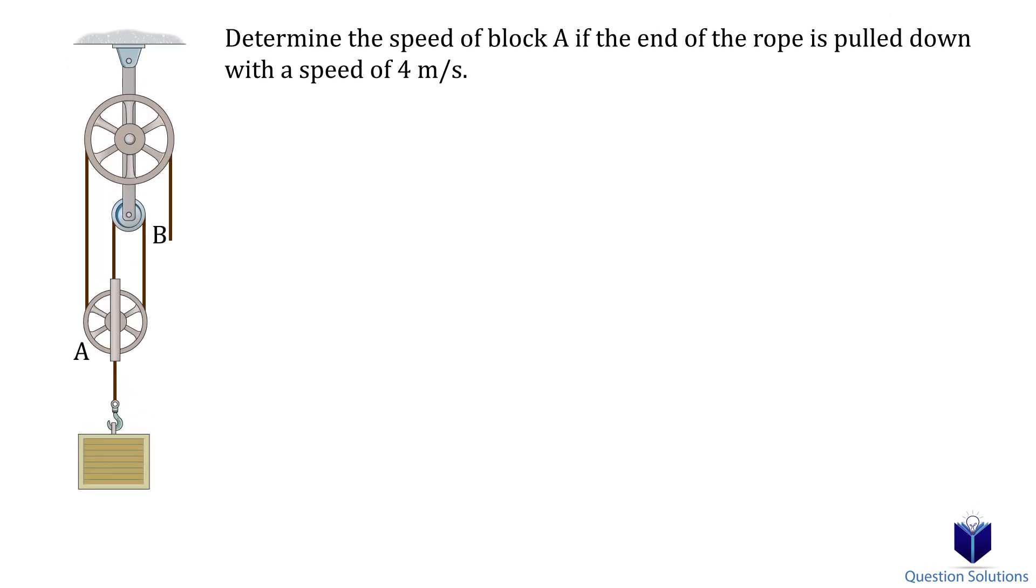Let's look at one last example. This isn't a hard example, but I wanted to show what happens when we have fixed lengths that we actually do need to account for. So in this example, we need to find the speed of the block. We can draw the datum at the top pulley. Now looking at this diagram, we see that even if the rope is pulled, the bar that's attached to the small pulley in the middle does not move. That's the fixed length.